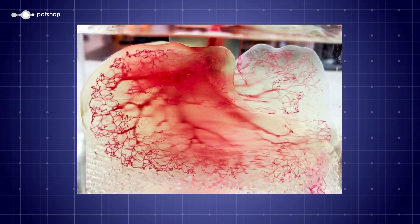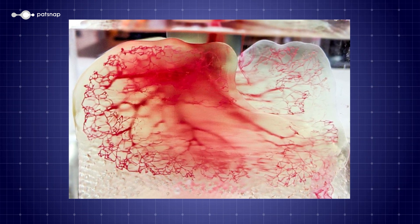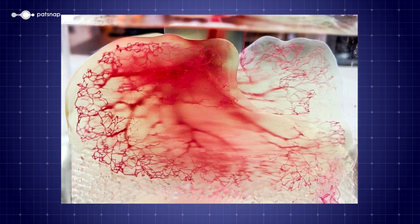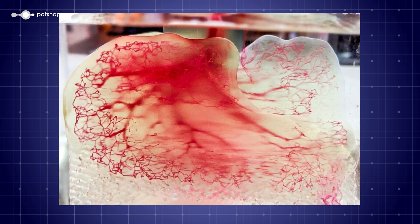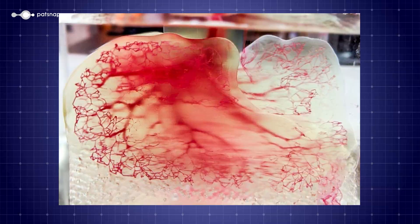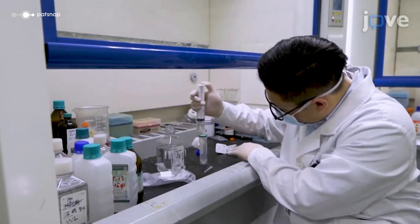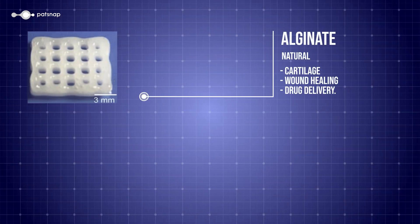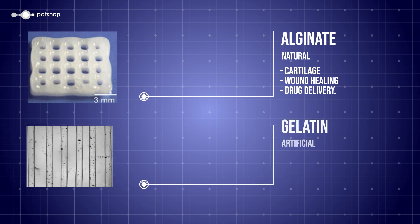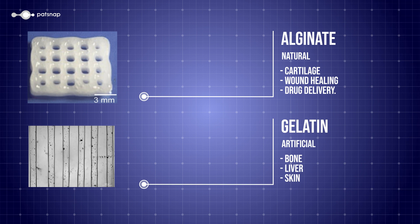But arguably, the most important is the structural bioink that forms the entire scaffold of the tissue or organ, and provides the framework within which all the other inks operate. The inks themselves can be made from a range of synthetic or natural materials, and are optimised for particular kinds of applications. For instance, alginate is a natural biomaterial often used for cartilage tissue engineering, wound healing, and drug delivery. Whereas gelatin is artificially synthesised, and often used for bone tissue, liver tissue, and skin regeneration.